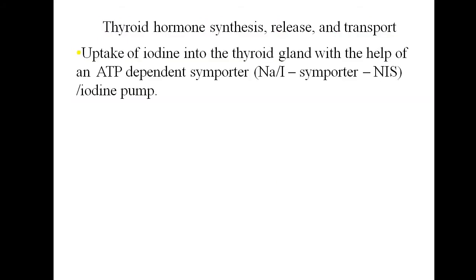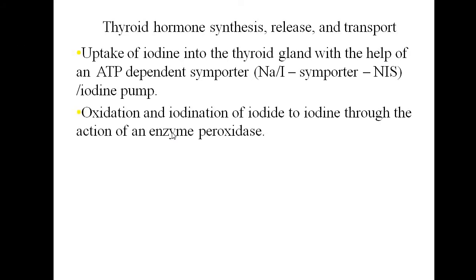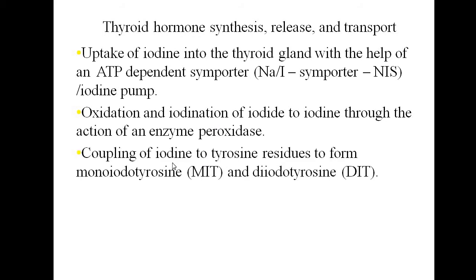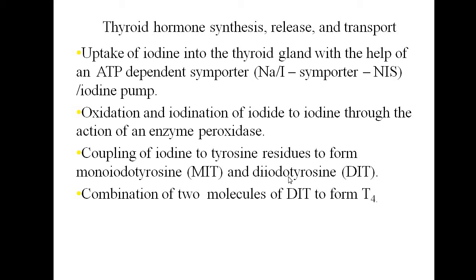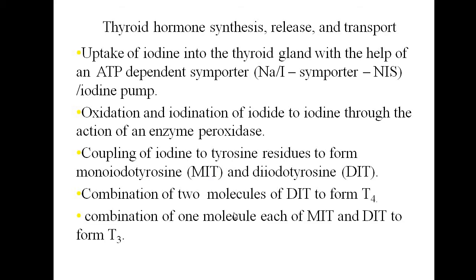The steps in the synthesis, storage, and release of thyroid hormones include: first, uptake of iodine into the thyroid gland via the sodium-iodine symporter, also called the iodine pump, which is an ATP-dependent pump. Once iodine is taken up, there is oxidation and iodination of iodide to iodine — the key enzyme here is peroxidase. Then there is coupling of iodine to tyrosine residues to form monoiodotyrosine (MIT) and diiodotyrosine (DIT). Combination of two DIT molecules forms T4; coupling of one MIT and one DIT forms T3.